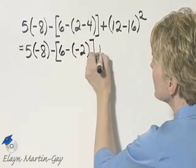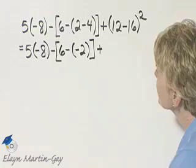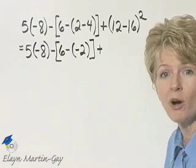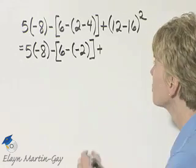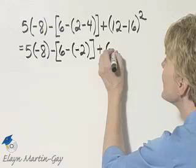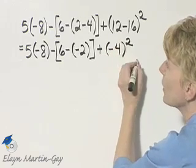plus 12 minus 16. Again, if you need to, go off to the side and write that down. But 12 minus 16 is negative 4, and then that is squared.